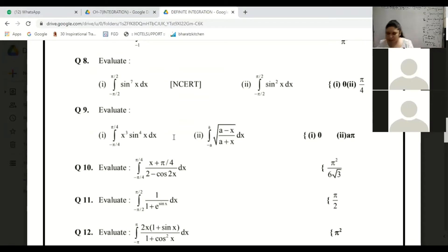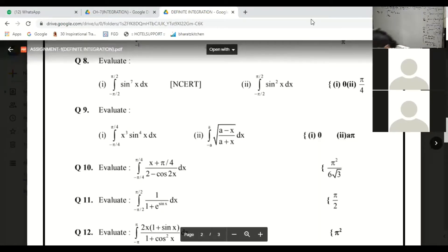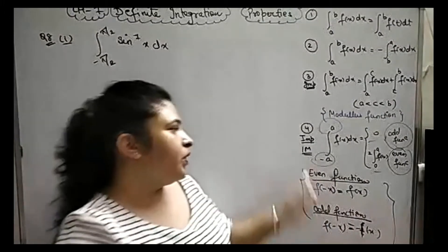First of all, you can see question number 8 with the limit from minus 5.80 to 5.80. Now, when you understand the limit, you will know that the question involves a property. The property is clear: minus A to A. That means the question uses this property.